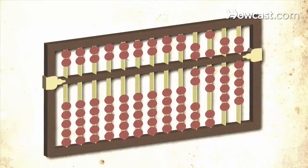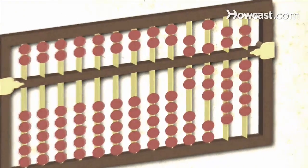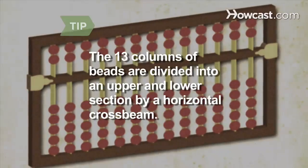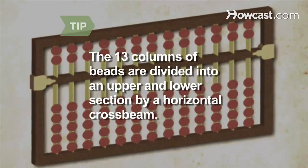Place the abacus on a flat surface with the upper section away from you. Push all the beads in the upper and lower sections away from the central crossbar. The Chinese abacus has 13 columns of counting beads divided into an upper and lower section by a horizontal crossbeam.